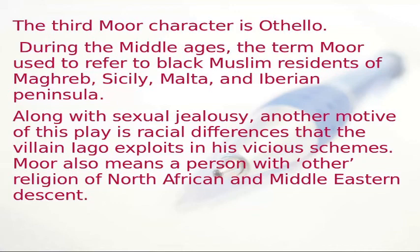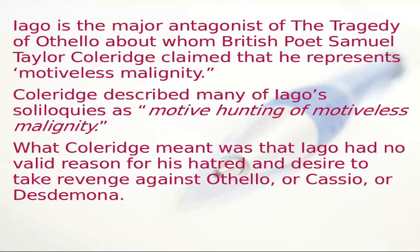Iago is the major antagonist of this tragedy, about whom British poet Samuel Taylor Coleridge claimed that he represents motiveless malignity. Coleridge described many of Iago's soliloquies as motive hunting of motiveless malignity — meaning Iago had no valid reason for his hatred and desire to take revenge against Othello, Casio, or Desdemona. We will discuss Iago's motives in detail, but let us first discuss the major characters.